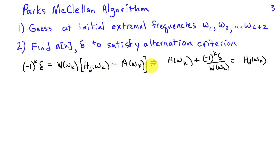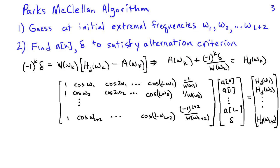So here we have A of omega K, which depends on the coefficients AK plus negative 1 to the K delta, which is also unknown, divided by W of omega K, has to be equal to HD of omega K. Writing it this way leads to a system of linear equations that we can solve to find a set of AKs which have alternating error. And we can write those down by concatenating the equations for each K.